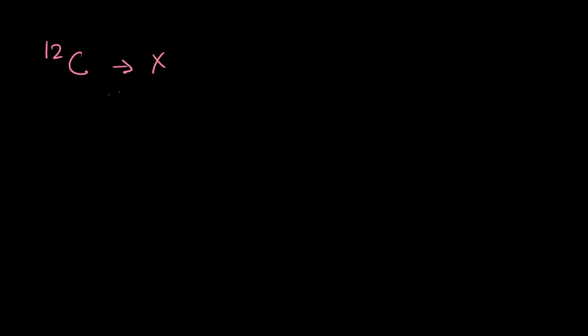Suppose you have carbon-12 which has a mass of x, carbon-13 which has a mass of y, carbon-14 which has a mass of z. And they are all available in different amounts. It may be available as 70%, let's take this as 20%, and this is 5%.